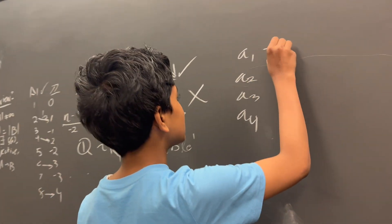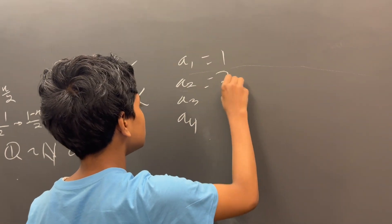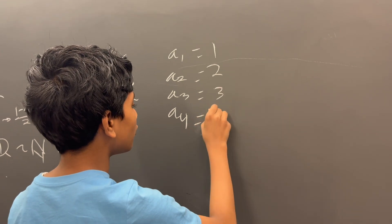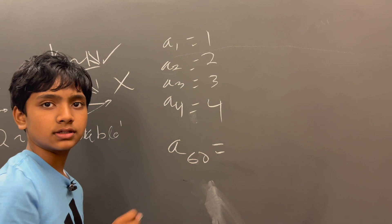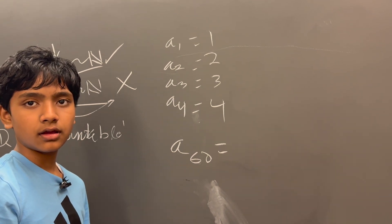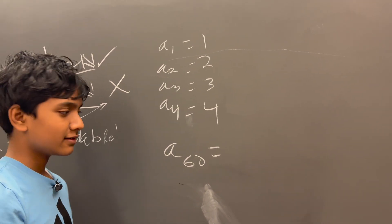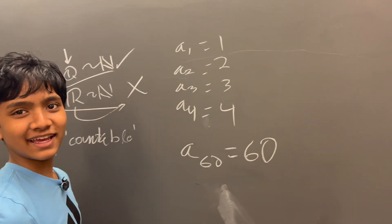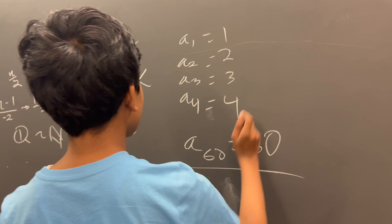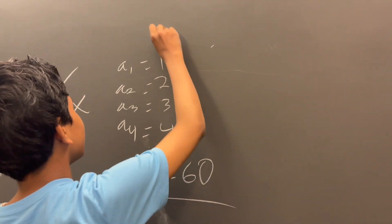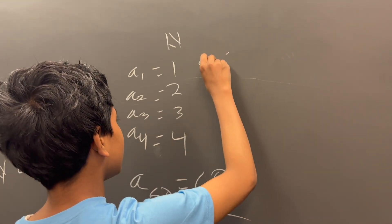For example, for the natural numbers, a1 is 1, a2 is 2, a3 is 3, a4 is 4. Quick, Dad, tell me. What is a60? You failed the IQ test. It's 60. In this case, when we have the natural numbers, an is n.